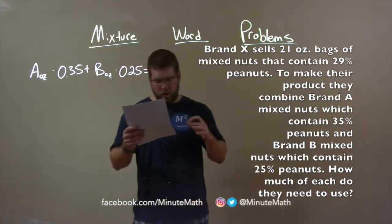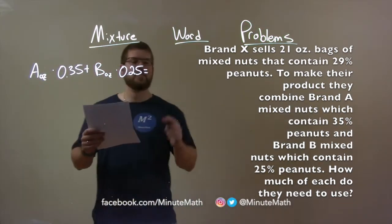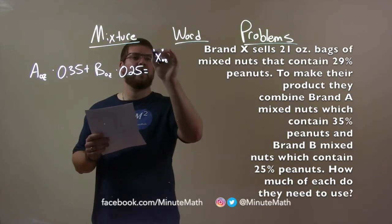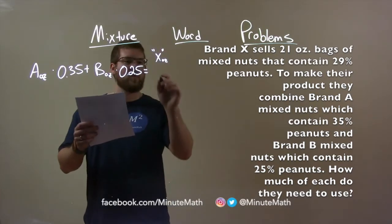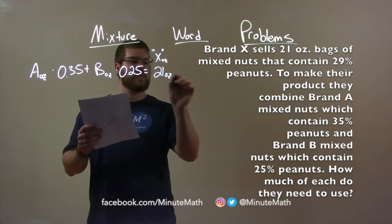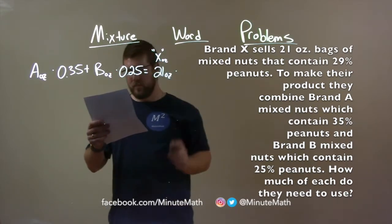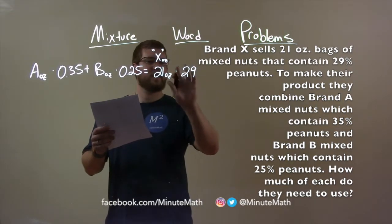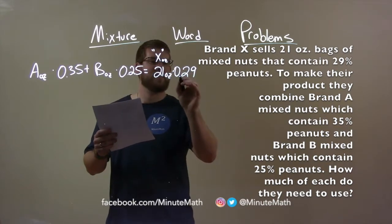That's going to equal our final amount, Brand X. So, this is Brand X in ounces, but we already know what that amount is. That is 21 ounces, they told us. And the final Brand X contains 29% peanuts. And that is a decimal, multiplied by 0.29.